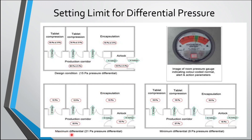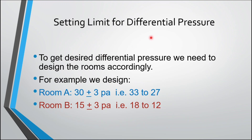Considering this design, the maximum differential pressure achievable is 21 Pascal and the minimum is 9 Pascal. Room A is designed at 30 ± 3 Pascal, so its maximum is 33 Pascal and minimum is 27 Pascal. Room B is designed at 15 ± 3 Pascal, giving an upper limit of 18 Pascal and a lower limit of 12 Pascal. Both rooms are grade D.